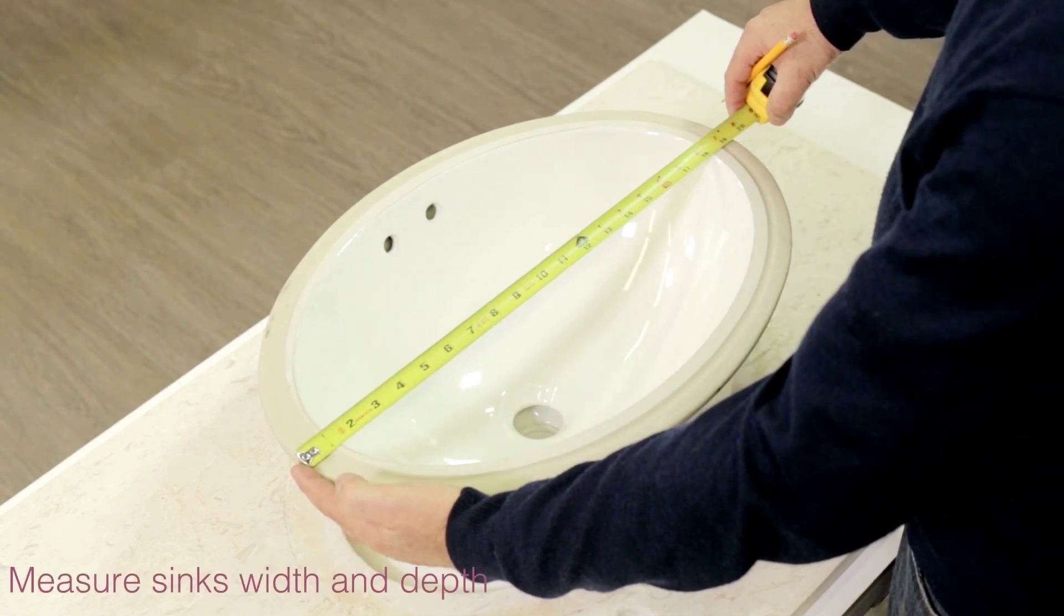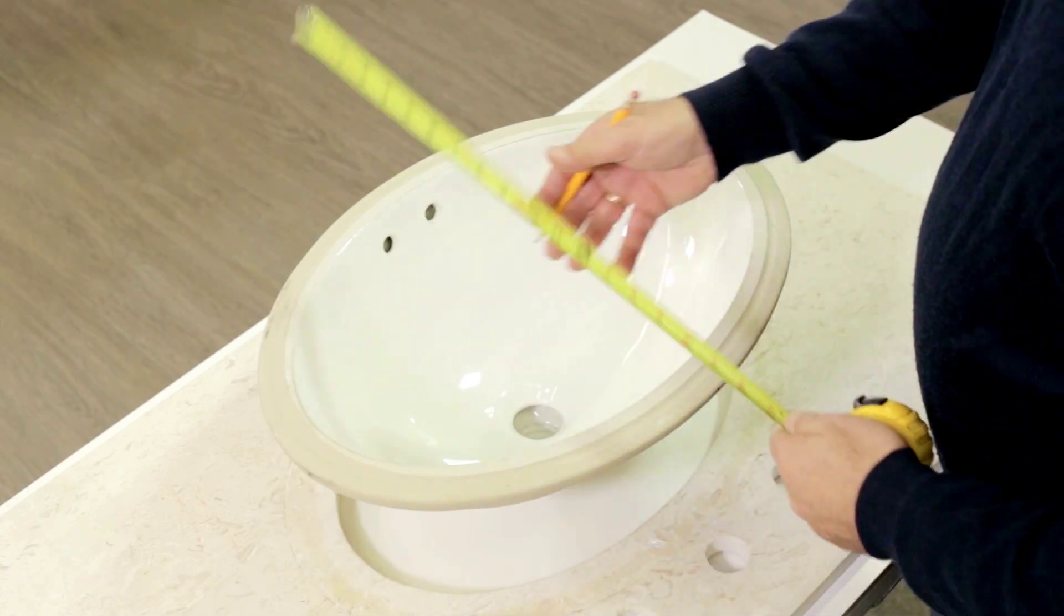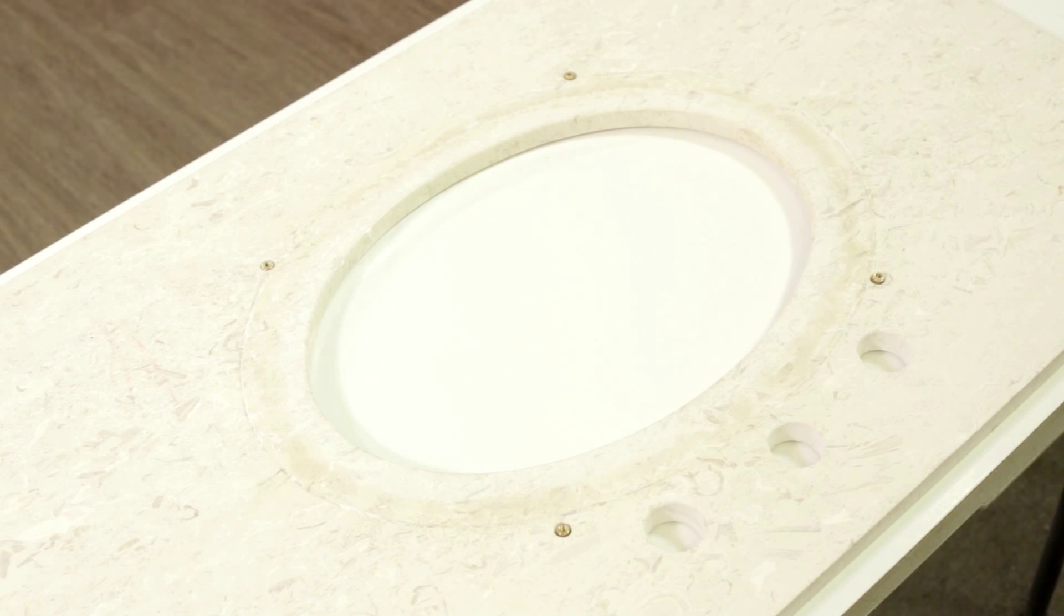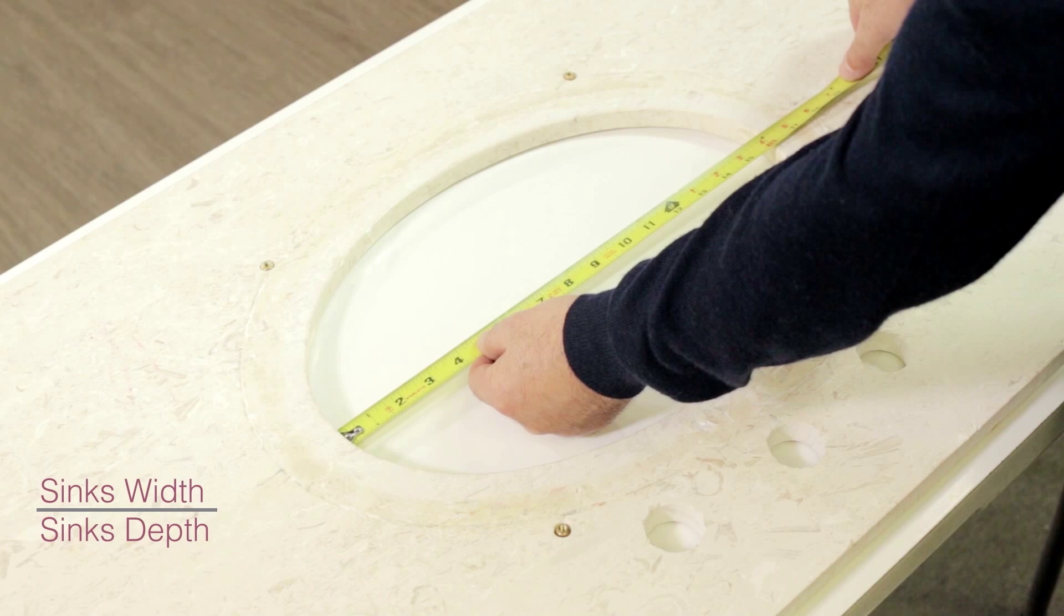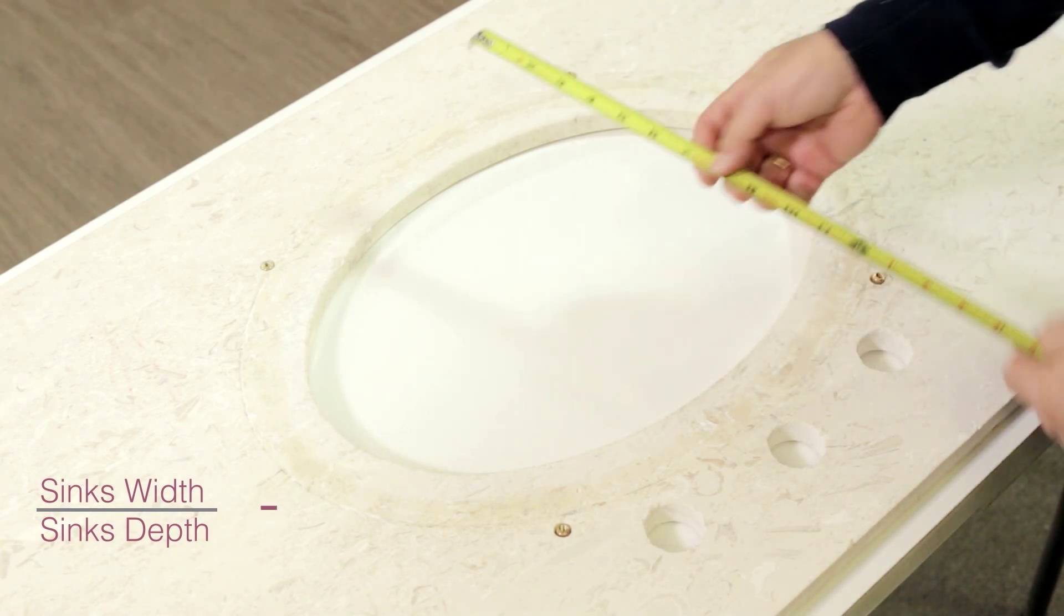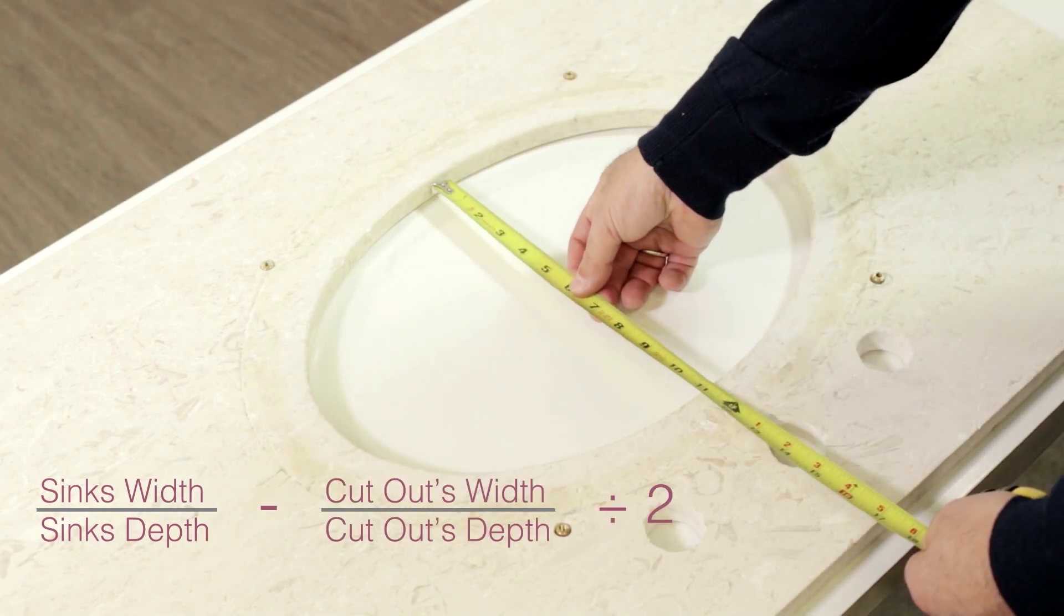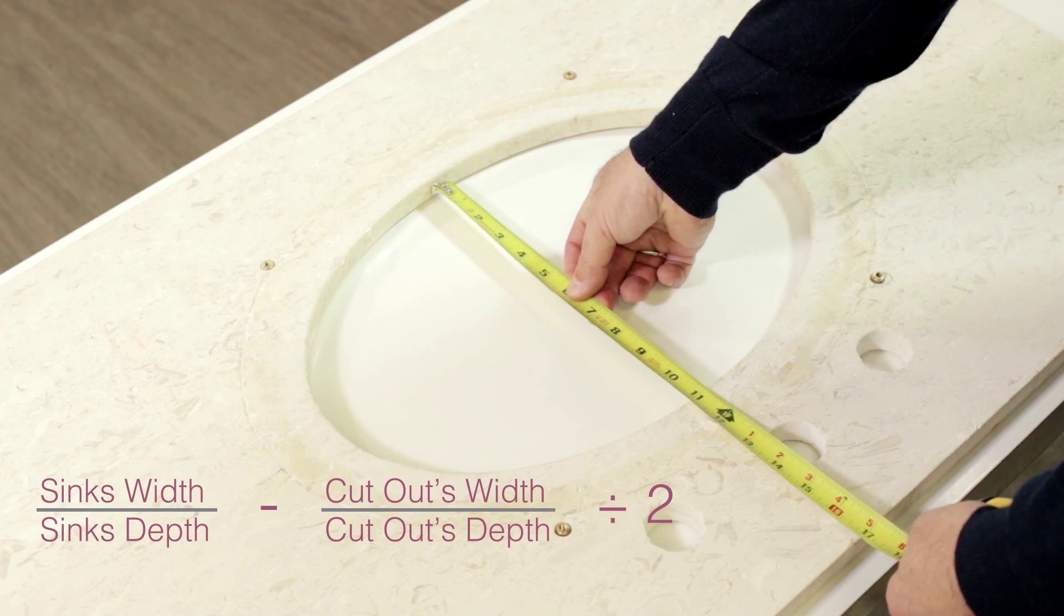Measure the inside of the cutout's width and depth. Determine the outside measurement of the cutout: take the sink's width over depth and subtract the cutout's width over depth, then divide by two. You will now have the outside cutout distance.